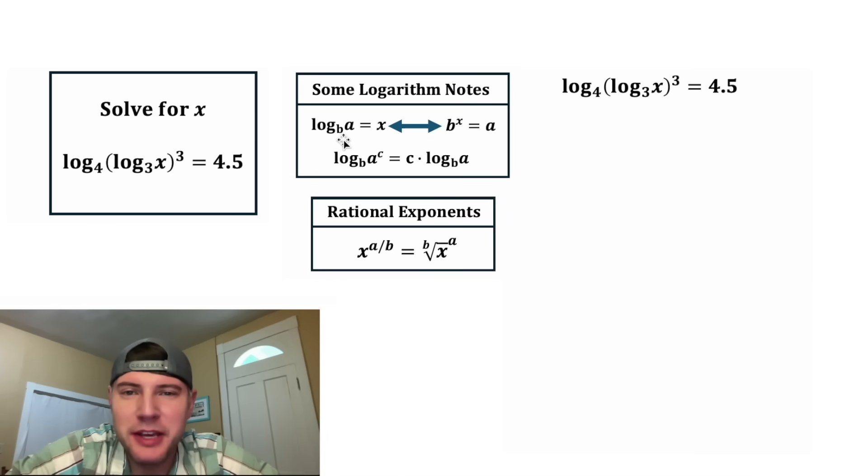The first one says if you have log base b of a equals x, that's the same thing as b to the x equals a. One way you can think of it is this to the power of this equals this. And that's what's going on right here. It's the base of the log to the power of this equals this.